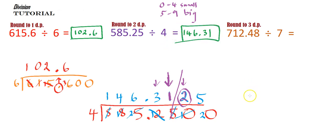Let's do the last one over here. So, we've got 712.48. And that gets divided by 7.